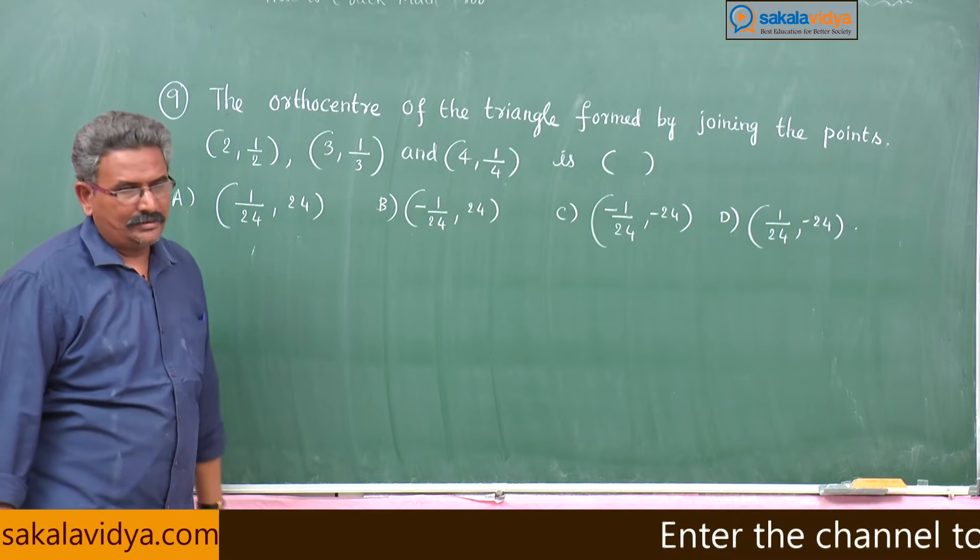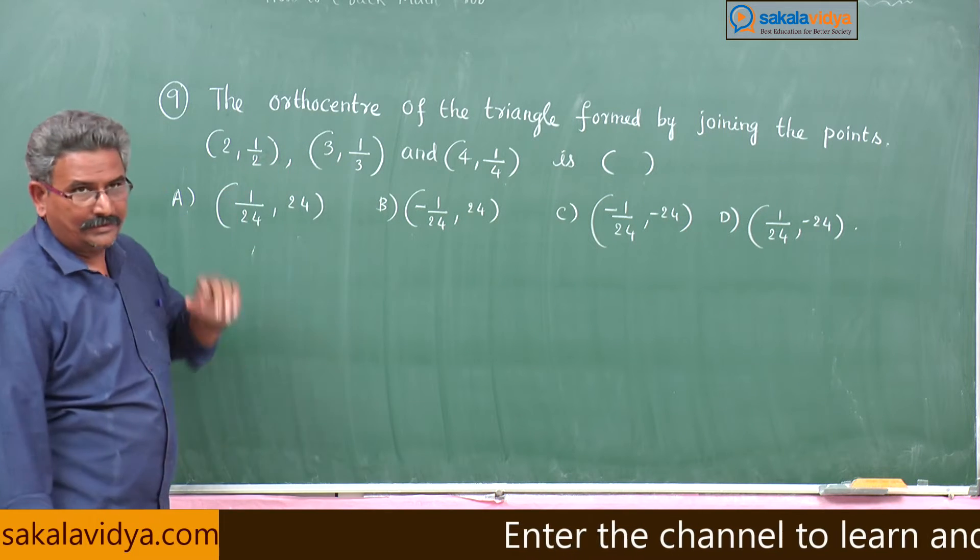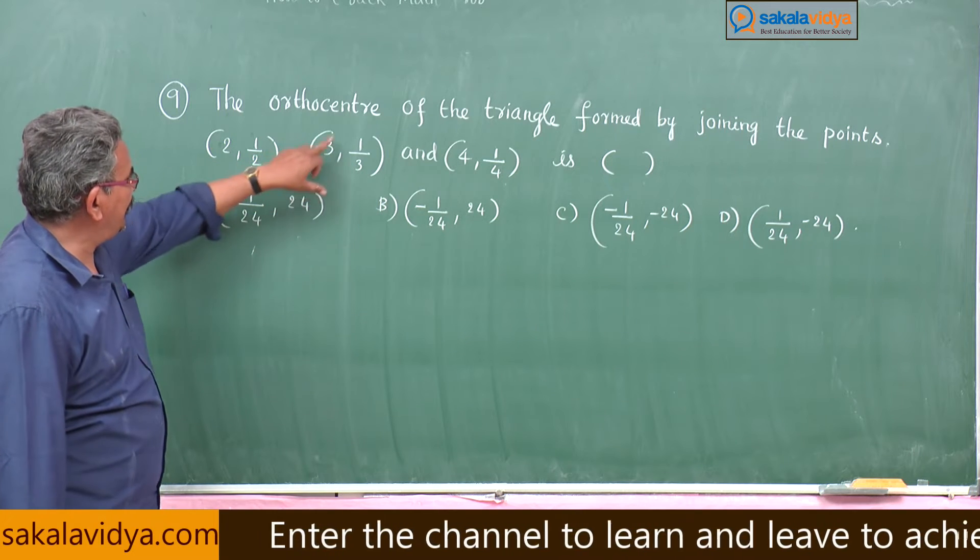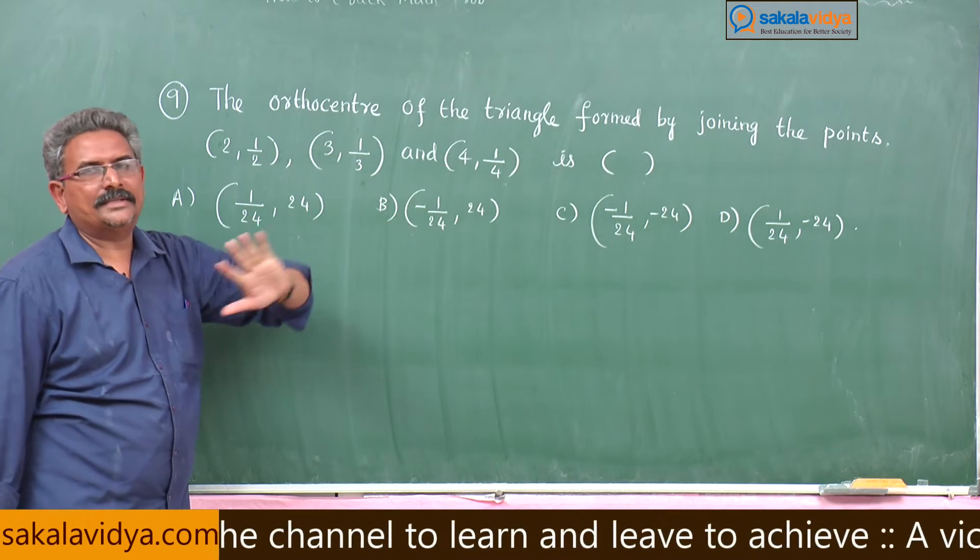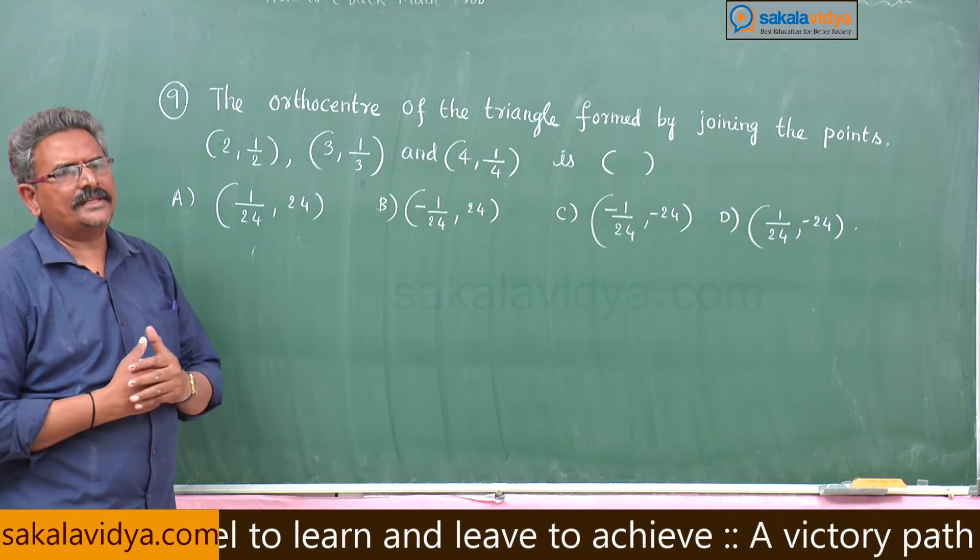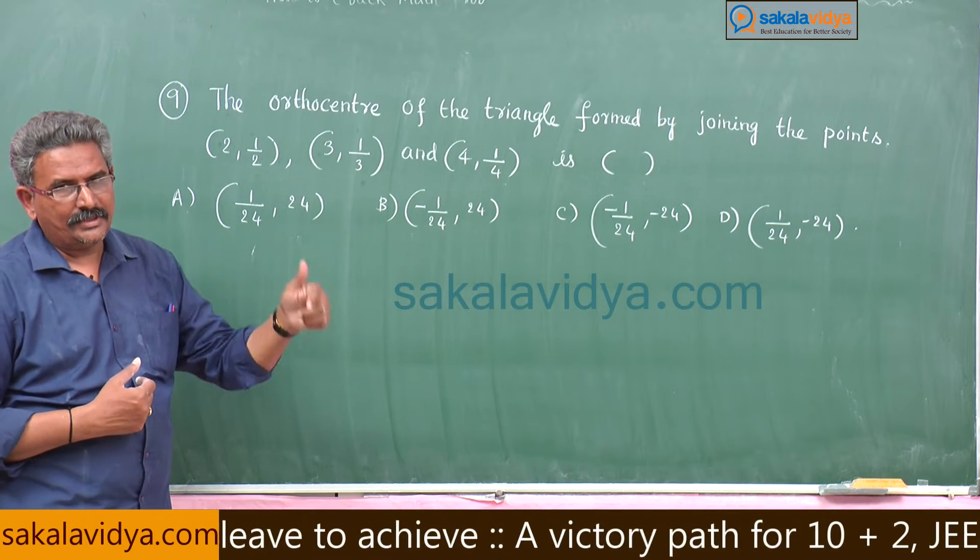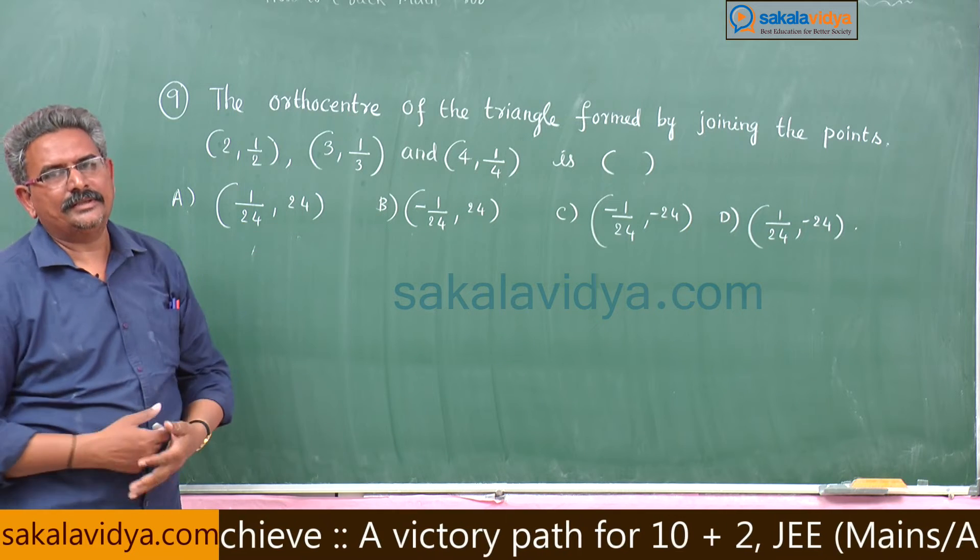If you observe this will be somewhat of a pattern: a comma 1 by a, b comma 1 by b, c comma 1 by c. Then the answer is very simple: minus 1 by a into b into c comma minus a into b into c, that is all.